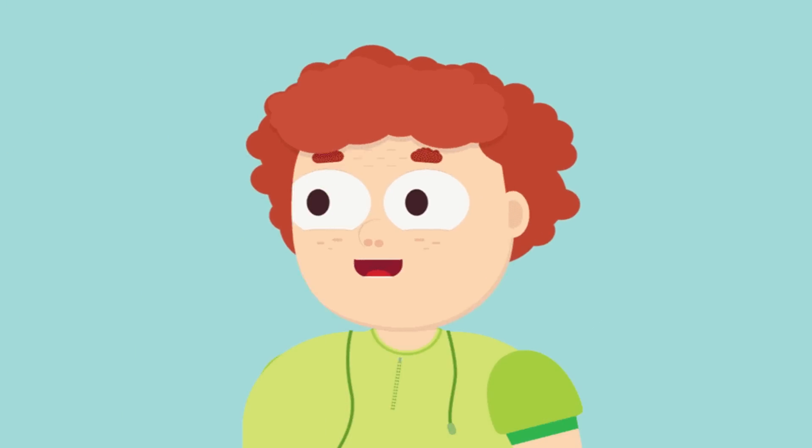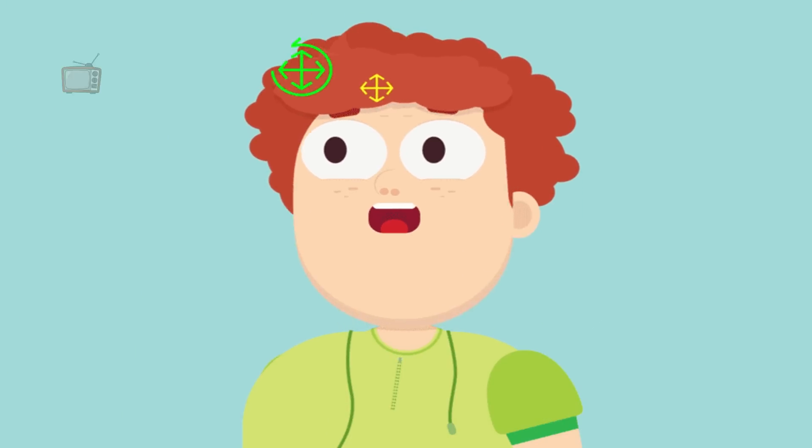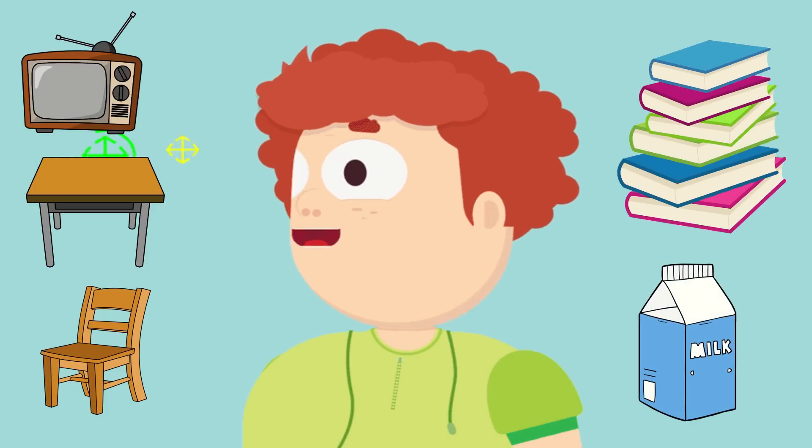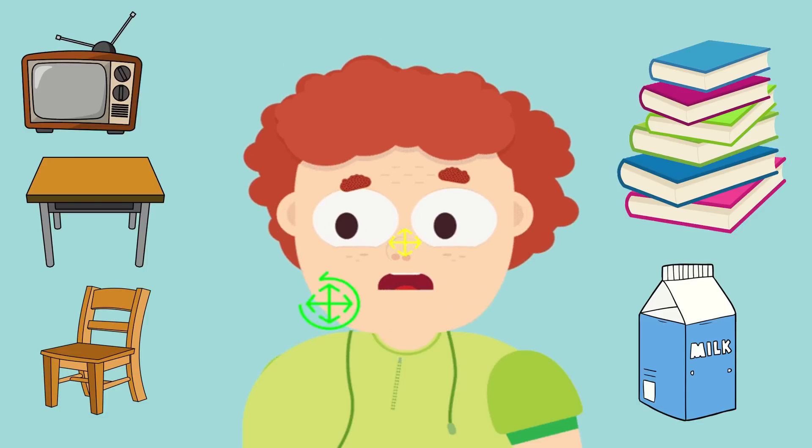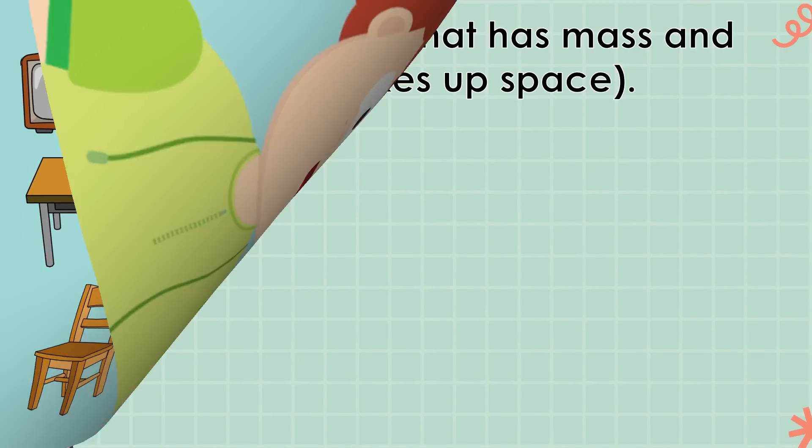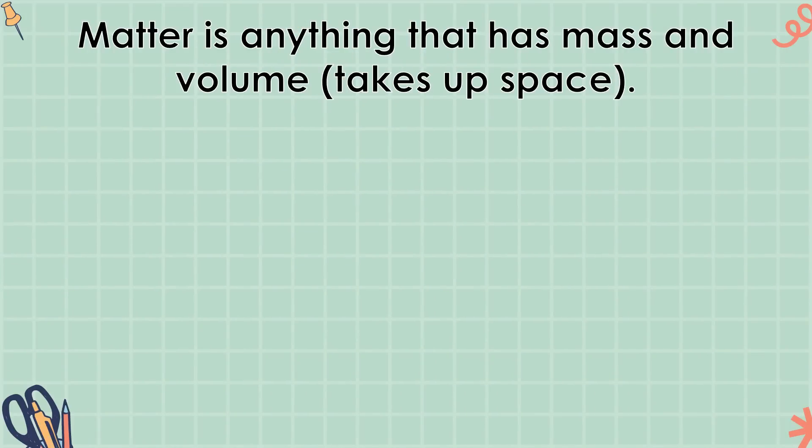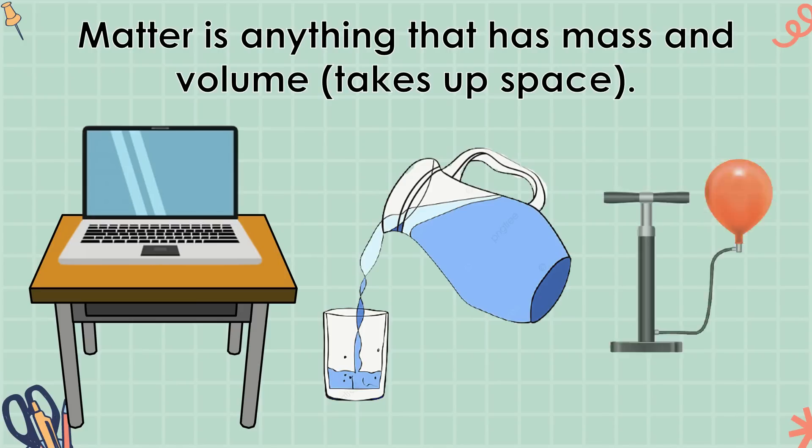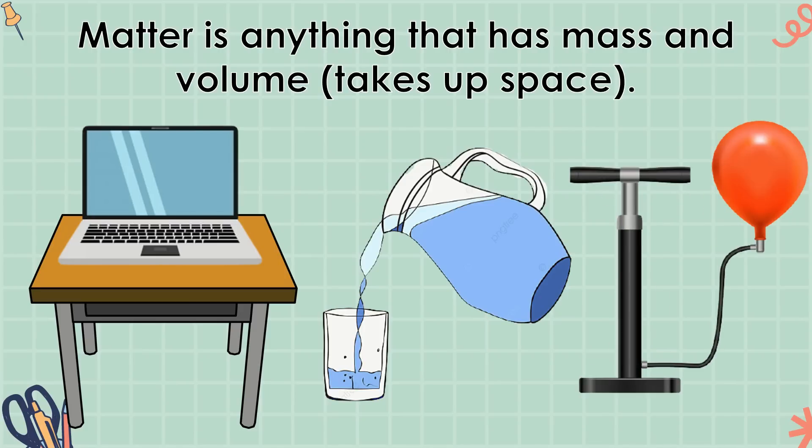Look around inside your house. You can see a variety of things such as television, table, chair, book, carton of milk, and many more. Ano sa palagay ninyo ang similarities na mga bagay na nabanggit? Tama ka! They are all examples of matter. Matter is anything that has mass and volume, and it takes up space. Halimbawa, kung ilalagay mo ang iyong laptop sa lamesa, o maglalagay ka ng tubig sa baso, o kaya naman ay maghahangin ng lobo, lahat sila ay nag-occupy ng space. Sa makatawid, lahat sila ay examples of matter. Remember class, that matter occupies space.